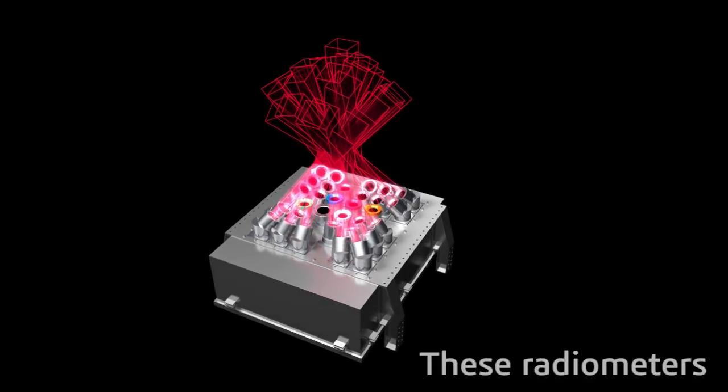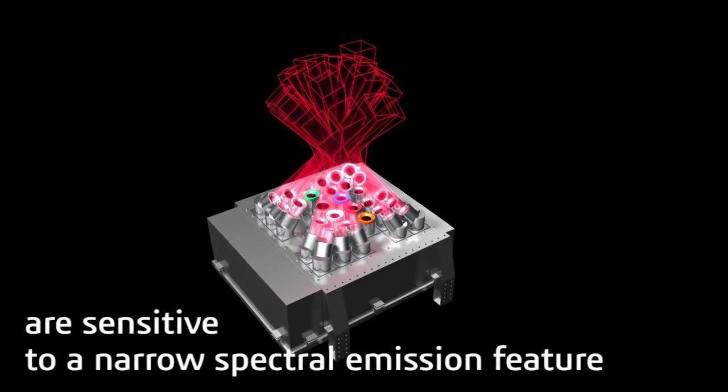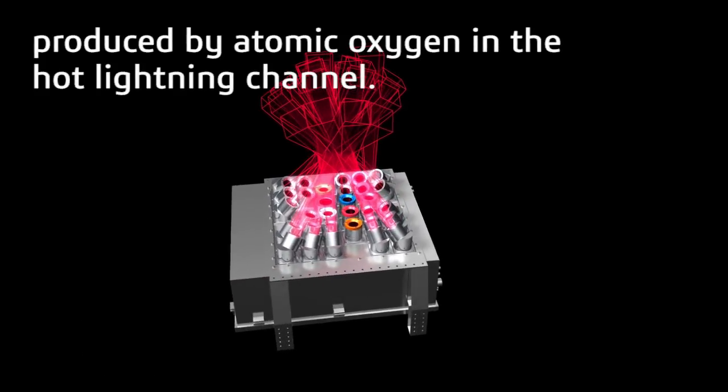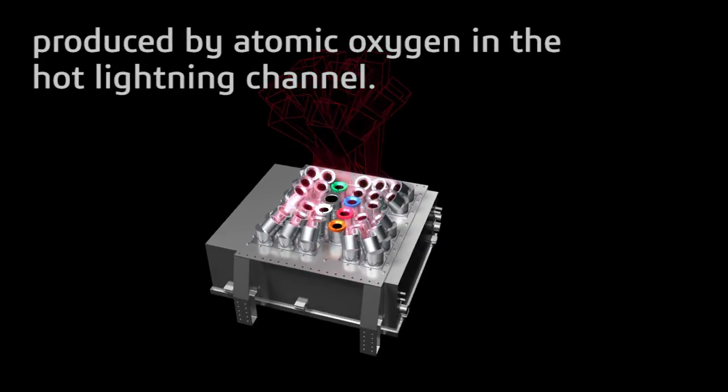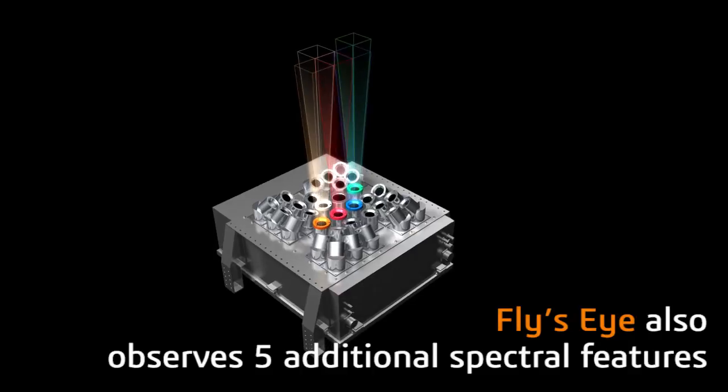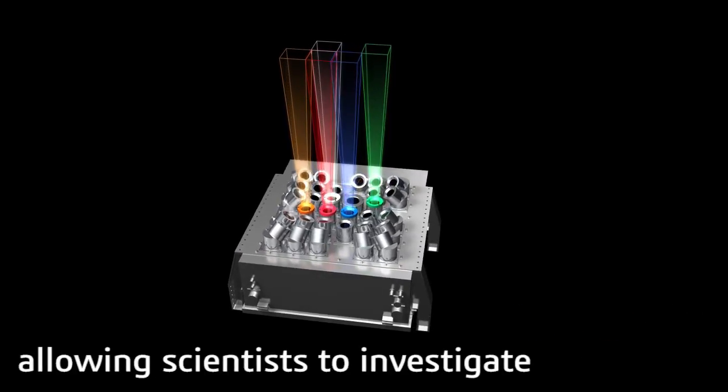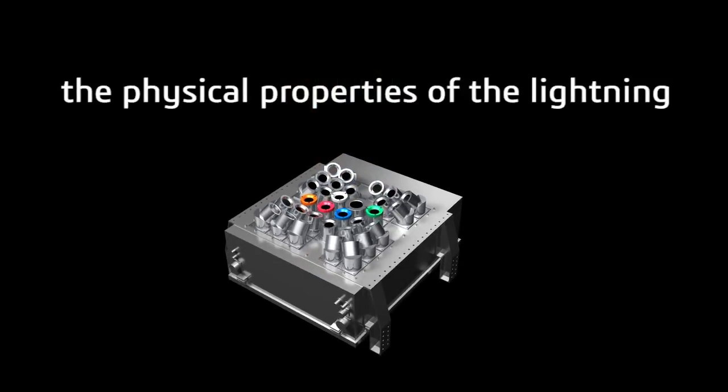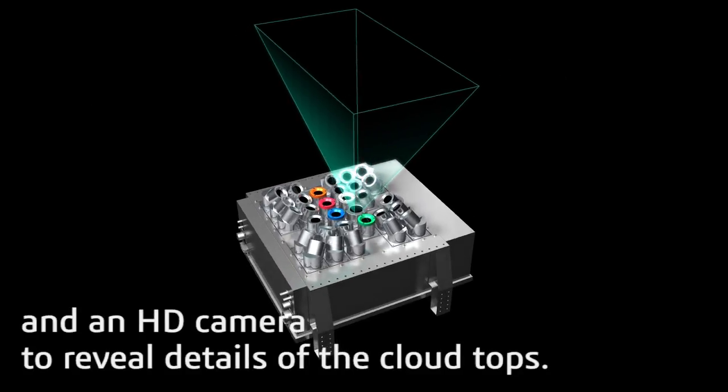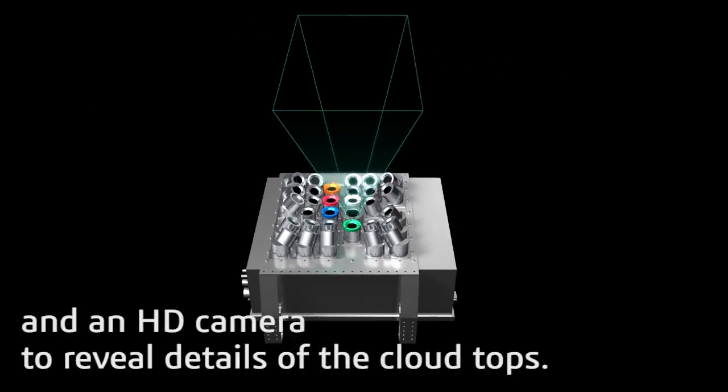These radiometers are sensitive to a narrow spectral emission feature produced by atomic oxygen in the hot lightning channel. Fly's Eye also observes five additional spectral features, allowing scientists to investigate the physical properties of the lightning, and an HD camera to reveal details of the cloud tops.